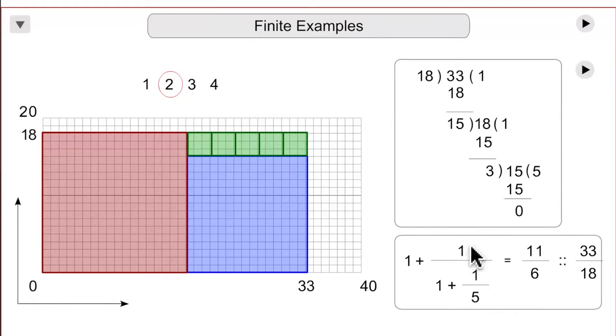1 over 6 fifths is 5 sixths, plus 6 sixths is 11 sixths. Times the 3 by 3, 3 is 33, 3 times 6 is 18, and that's the size of the grid.